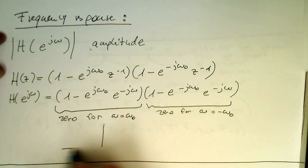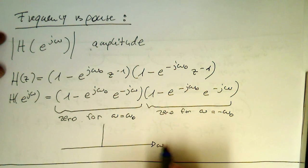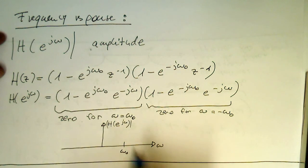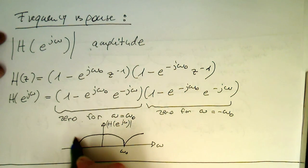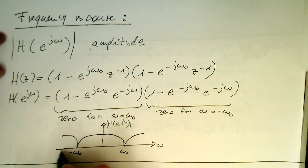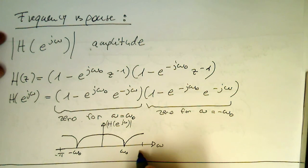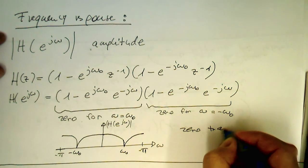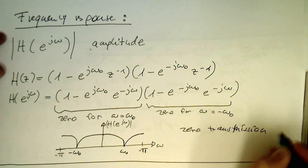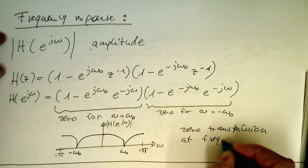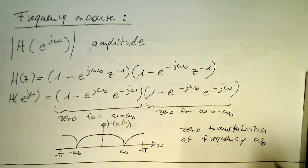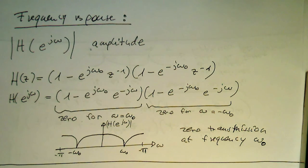So our frequency response H(e^(jω)), plotted from -π to +π, has a dip — zero transmission — at ω = ω₀ and another at ω = -ω₀. In other words, there is zero transmission at frequency ω₀. So a complex conjugate zero pair suppresses one frequency.